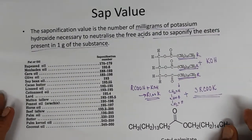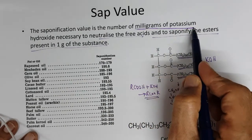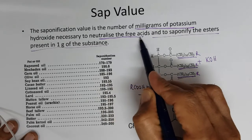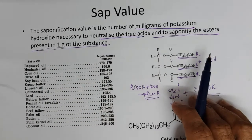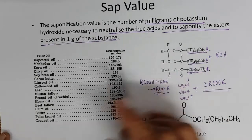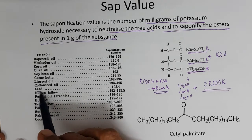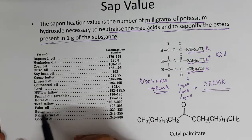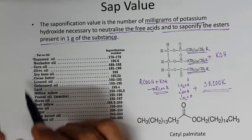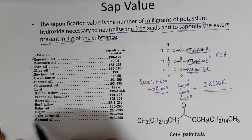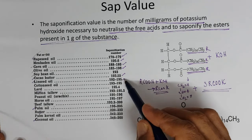The second parameter is the saponification value. The saponification value is the number of milligrams of potassium hydroxide necessary to neutralize the free fatty acids and to saponify the esters present in 1 gram of the substance. These include vegetable oils such as rapeseed oil, corn oil, olive oil, soybean oil, cocoa butter, linseed oil, coconut oil, and palm oil, as well as non-vegetable fats like beef tallow and lard. These are all the saponification values for those oils.